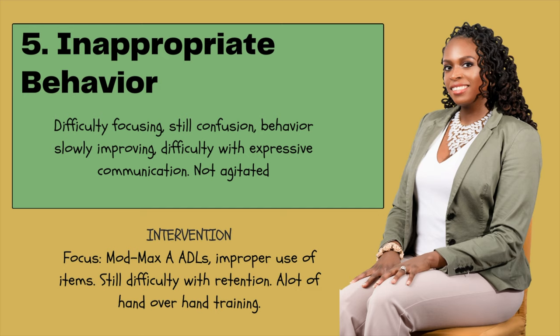Stage five is inappropriate behavior. They're going to have difficulty focusing — they're still confused, but the behavior slowly starts to improve. There's difficulty with expressive communication, but they're not as agitated as in stage four. Your intervention will start to improve as the behavior improves. They're about modified to max assist for their ADLs. You will see improper use of equipment — toothbrushes, combs — maybe using a spoon as a comb. They're going to have difficulty with retention, so you're going to be doing a lot of hand-over-hand and verbal cueing. Safety again is very important.